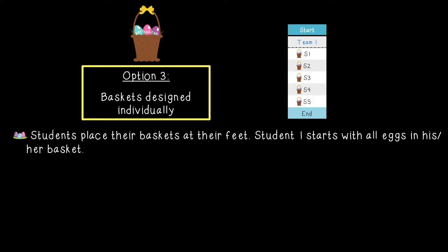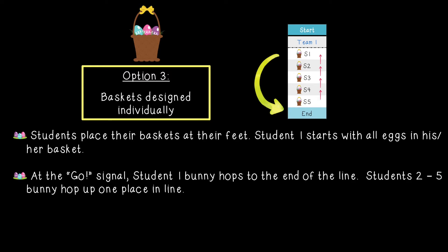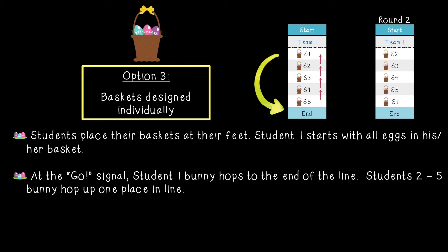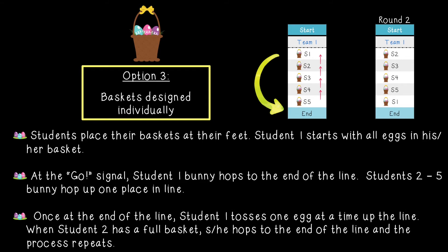Option three: baskets designed individually. Students place their baskets at their feet. Student one starts with all the eggs. At the go signal, student one bunny hops to the end of the line while students two through five hop up one place. Once at the end, student one tosses one egg at a time back up to the front. When student two has a full basket, he or she hops to the end and the process repeats. The relay is completed after the last student has hopped to the end and all eggs are returned to the basket of the student at the front of the line.